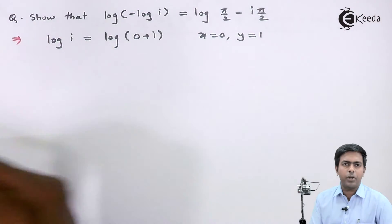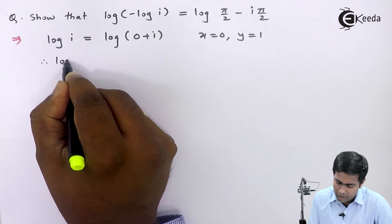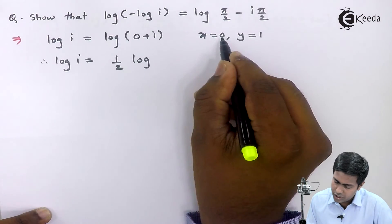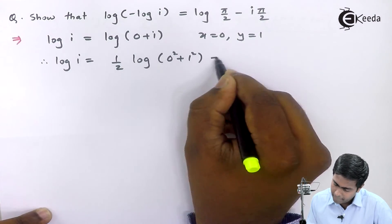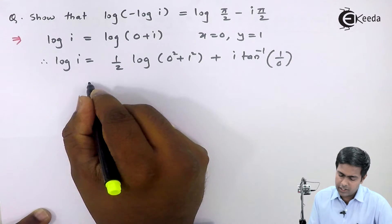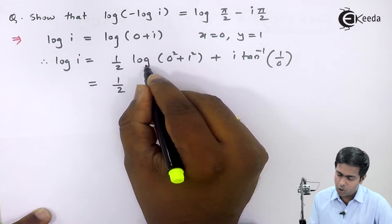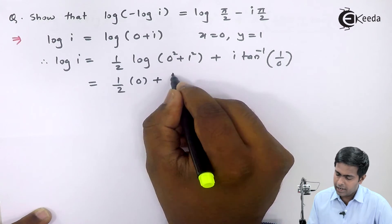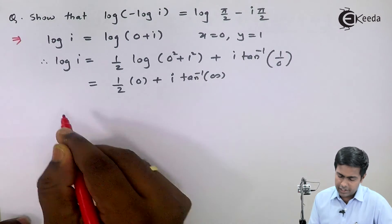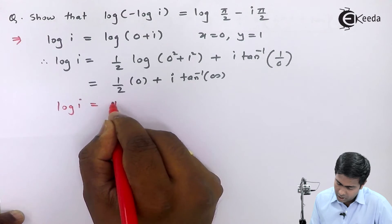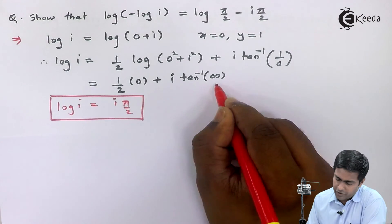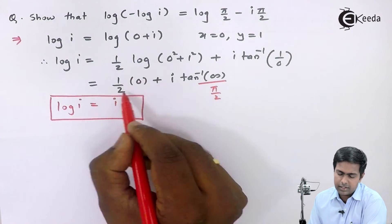Using the logarithm formula, log of i equals one half log of x squared plus y squared plus i tan inverse of y by x. Substituting x equals 0 and y equals 1: we get one half log of 0 squared plus 1 squared plus i tan inverse of 1 by 0. This gives one half times log of 1, which is 0, plus i tan inverse of infinity. Since tan inverse of infinity equals pi by 2, we get log of i equal to i pi by 2.